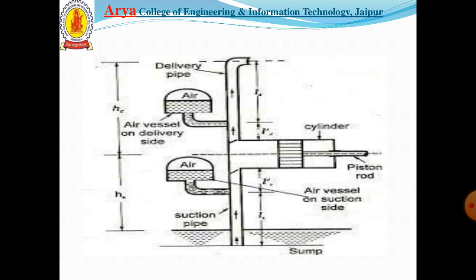The figure shows the single acting reciprocating pump with air vessels fitted at both the suction side and delivery side. The air vessels are filled with liquid at the bottom and compressed air at the upper side. They are fitted near the valves — below the suction valve and above the discharge valve.